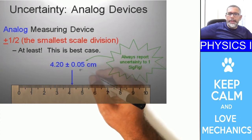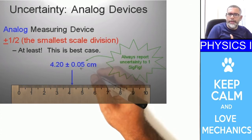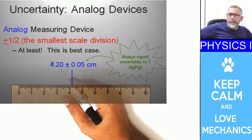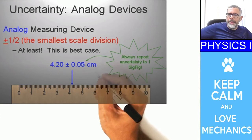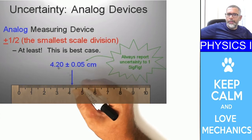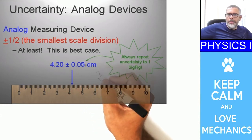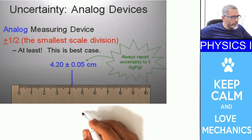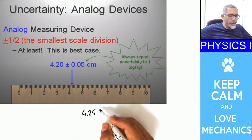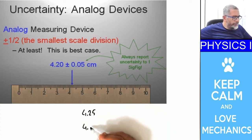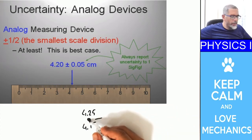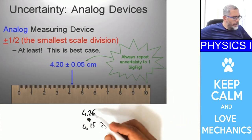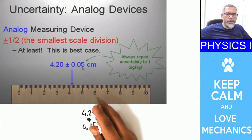So the measurement is 4.20 ± 0.05 centimeters. The measured value is 4.20 centimeters and the uncertainty is 0.05 centimeters. This means the true value is a number between 4.15 and 4.25 centimeters. You are sure the true value is in between, but you don't know the exact value — all you know is there is this small uncertainty.